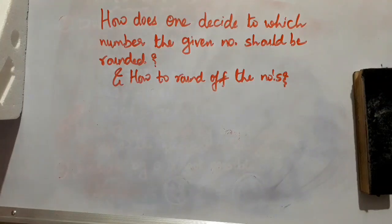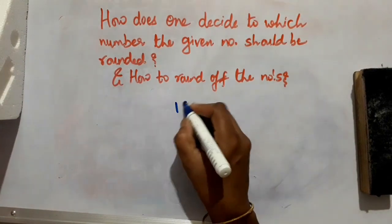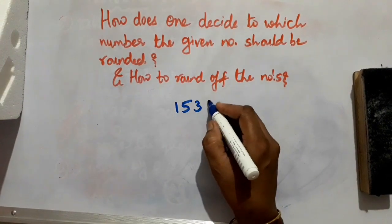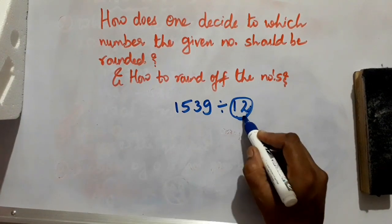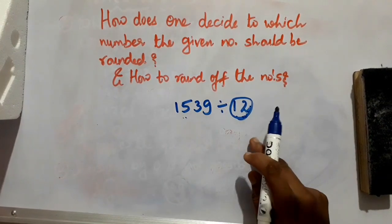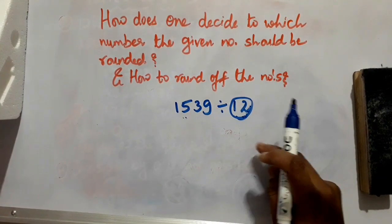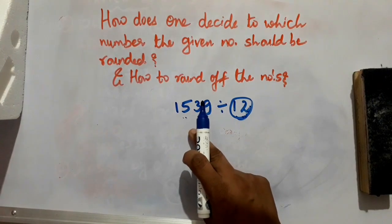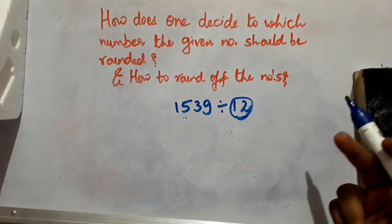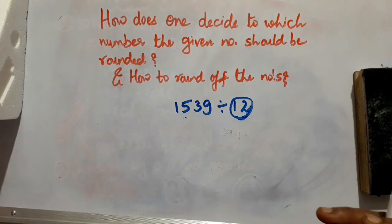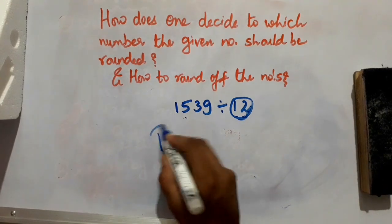Division is the process of finding out how many times a particular number — the divisor — will fit into the given number. For example, 1539 divided by 12 means how many times 12 will come in this number. Division can also be done by the repeated subtraction method.